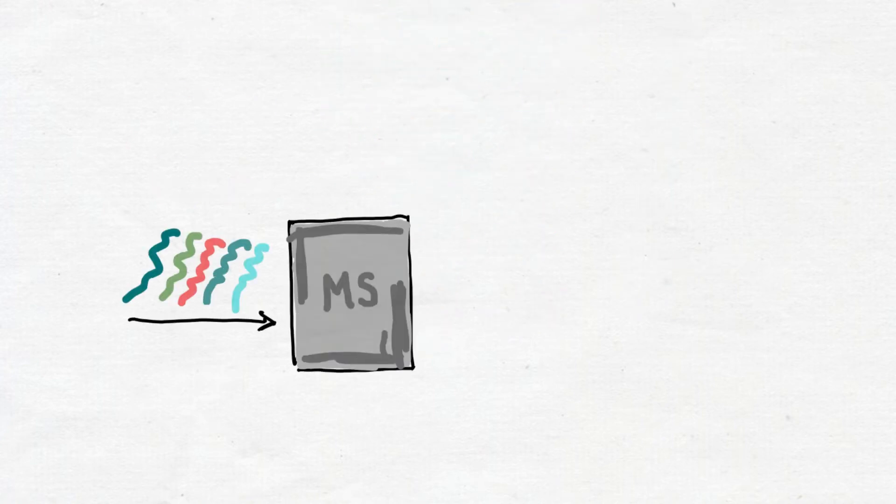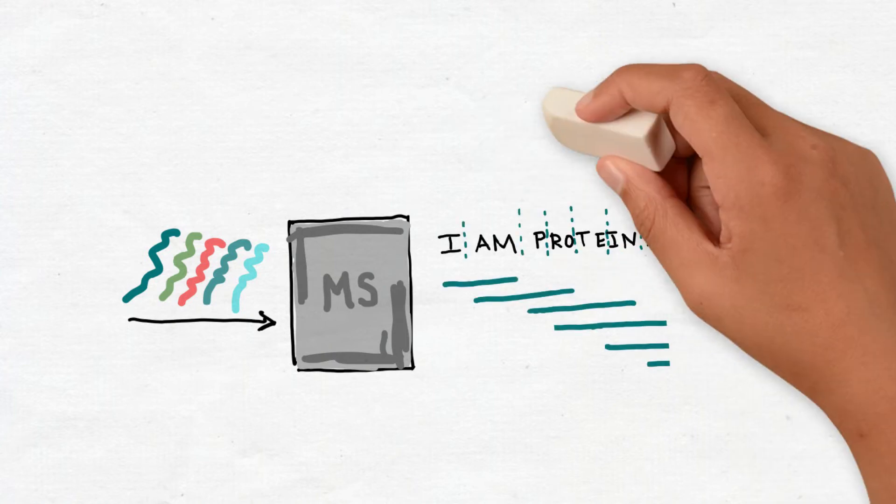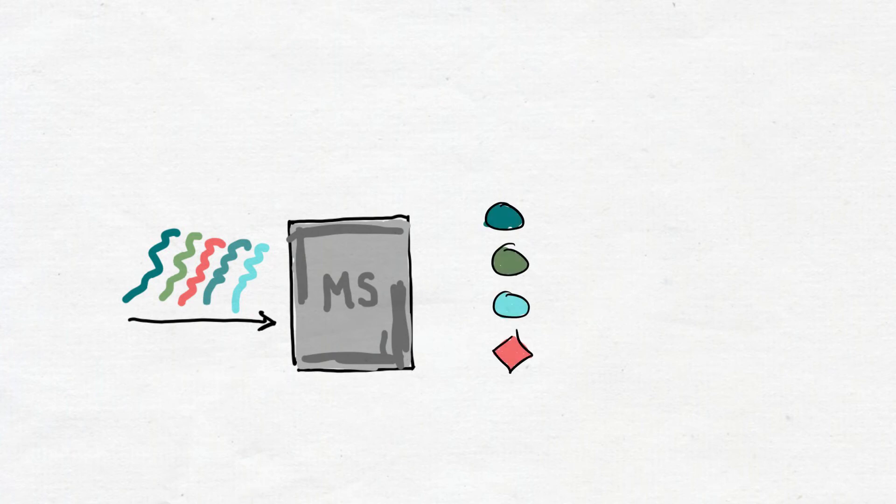The mass spectrometer detects peptides in our sample to read them like we would read a sentence. We use the detected peptides to tell which proteins were in our sample.